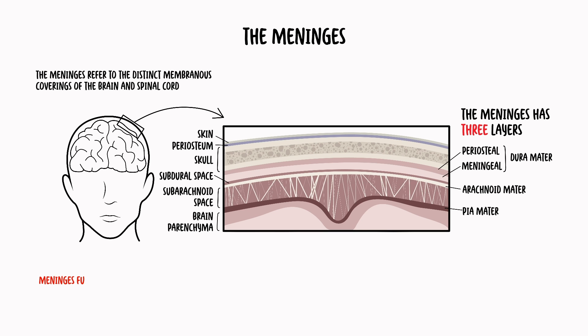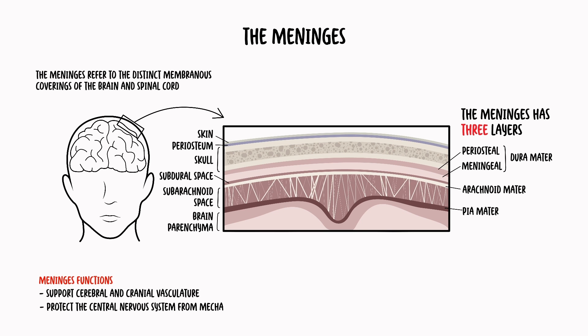The meninges have two major functions. Firstly, they support cerebral and cranial vasculature. And secondly, they act with the cerebrospinal fluid to protect the central nervous system from mechanical damage.